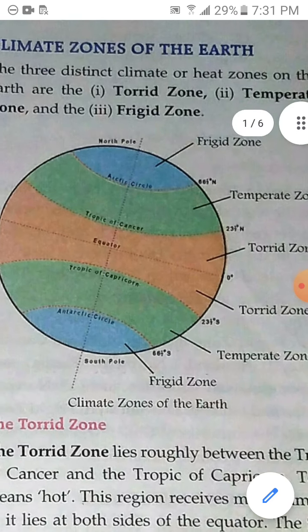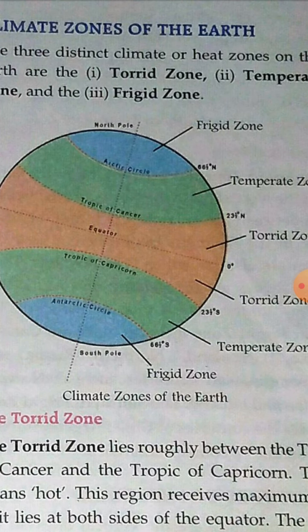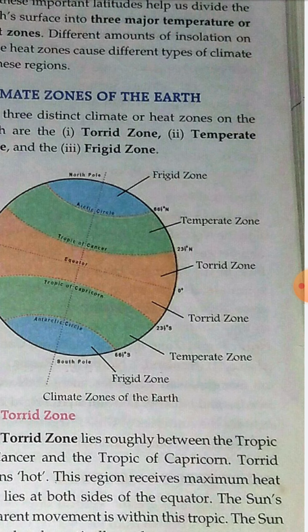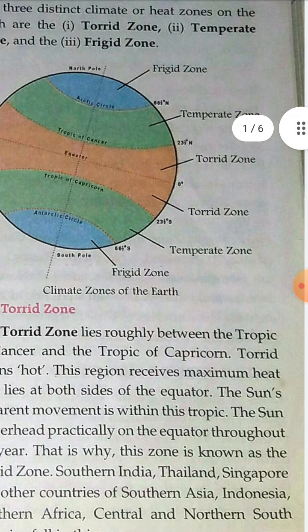You can see in this picture that at 0 degrees we have the equator, at 23.5 degrees north and 23.5 degrees south we have the Tropic of Cancer and Tropic of Capricorn. The region marked in orange is the hottest place because sun rays fall directly at the equator and cover the shortest distance to reach it. This is why it is known as the Torrid Zone.